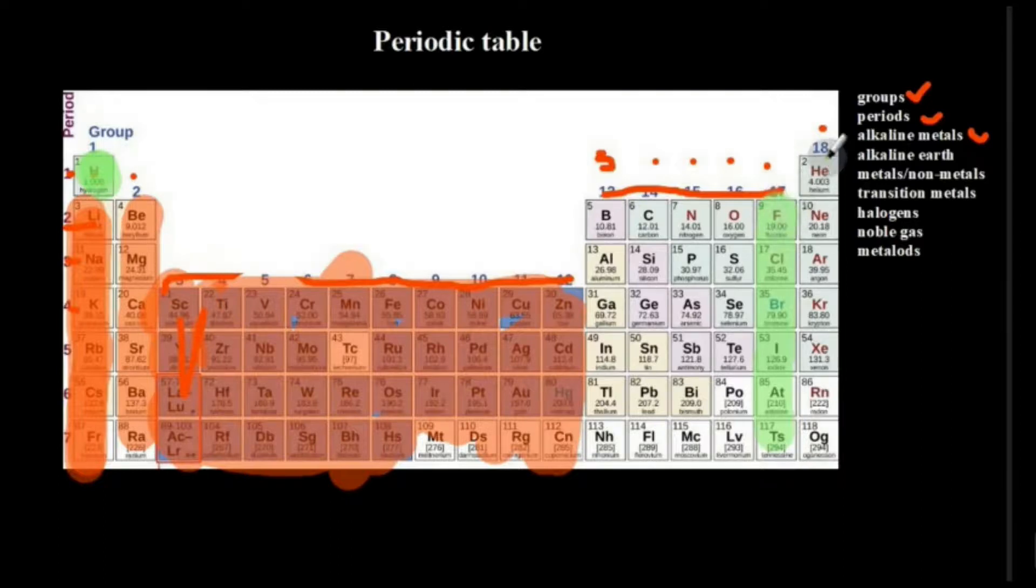What we have in the group eight is the noble gases. These basically are known to be stable and do not react. They are highly unreactive. So they are found in group eight and they are very stable. And what we have here are the noble gases and group seven are what we call the halogens. So we have the noble gases, halogens and transition metals.